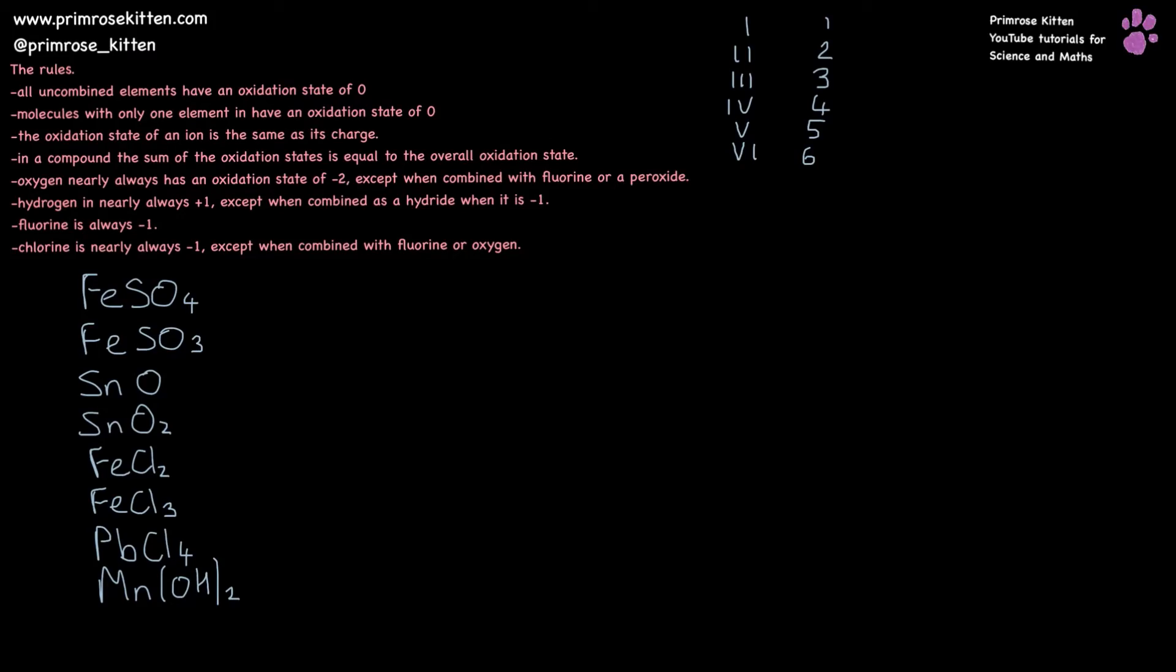To properly name compounds from the ionic formulas, you need to first of all be familiar with Roman numerals: one, two, three, four, five, six. You could probably get away with just learning up to six, but you might as well learn more properly because they can be useful at other points in life. And then you need to be familiar with learning and assigning oxidation states. If you haven't done that video yet, or if you're new to this and don't know how to assign oxidation states, I suggest you go and look at that video first.